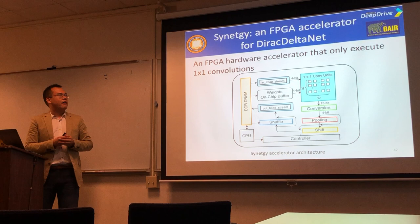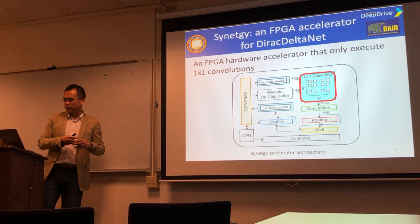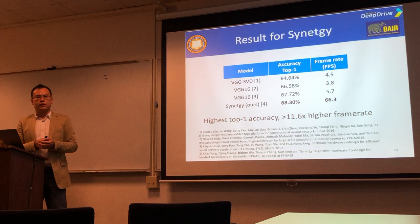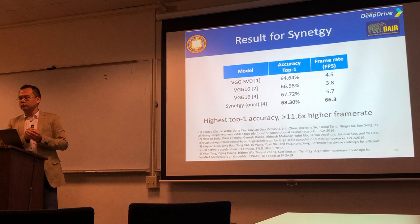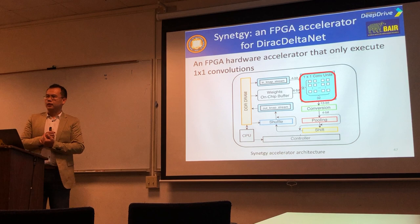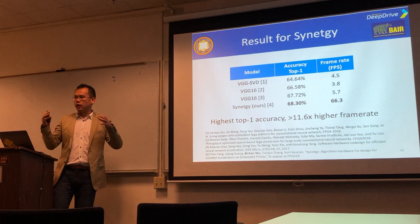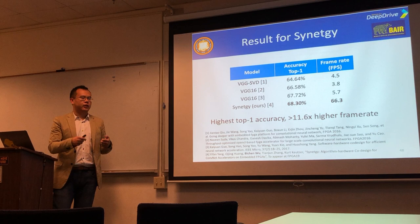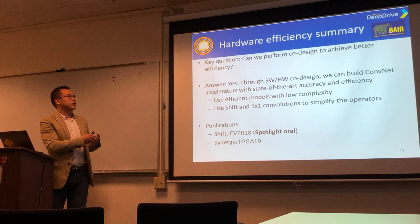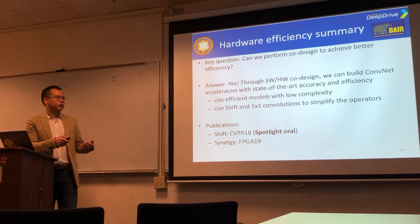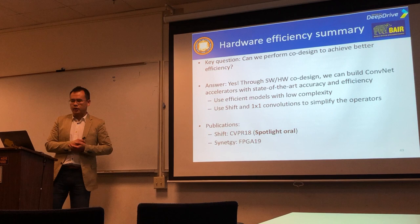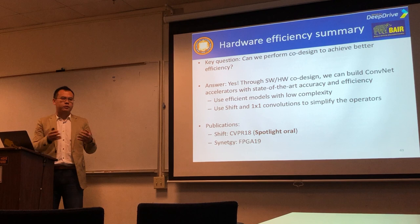This allows us to build an FPGA accelerator where the only compute unit is 1x1 convolution, which can run quite fast. Comparing accuracy versus efficiency with previous state-of-the-art on embedded FPGA boards, we achieve the highest accuracy and a frame rate 11.6x higher than the previous state-of-the-art. The shift operator paper was published at CVPR last year as a spotlight oral paper, and the DiracDeltaNet FPGA accelerator work was published at FPGA this year.